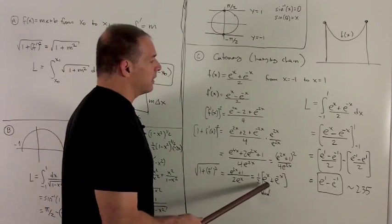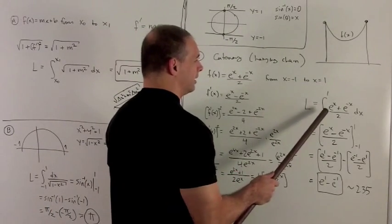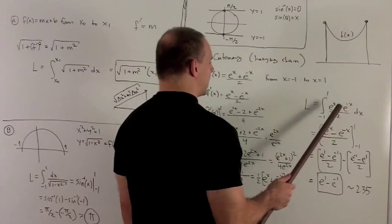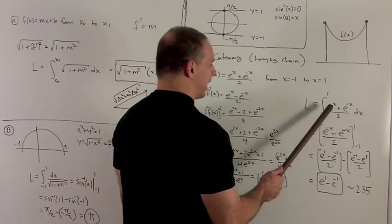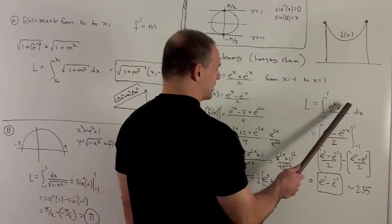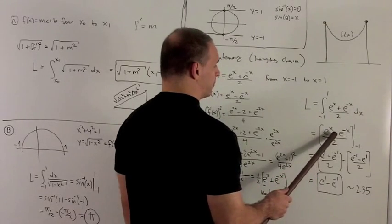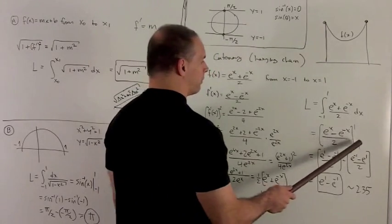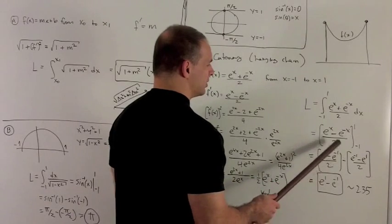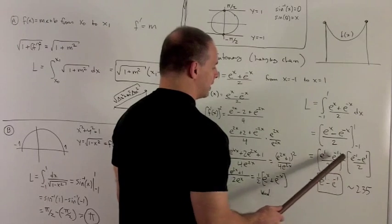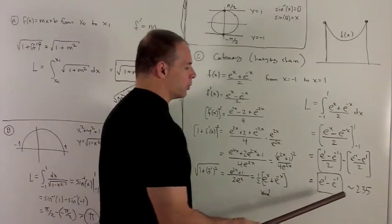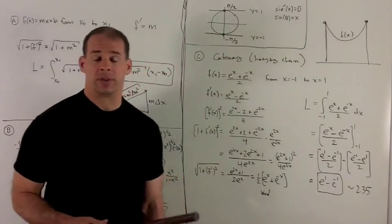Now I can take the length from minus one to one. The arc length integrand is (e to the x plus e to the minus x) over 2 dx. Integrating: the antiderivative of e to the x is e to the x, and the antiderivative of e to the minus x is negative e to the minus x. Evaluating from minus one to one: plugging in 1 gives one expression, and plugging in minus one just changes the order, so when we take the difference we get e to the 1 minus e to the minus 1, which is approximately 2.35 on the calculator.